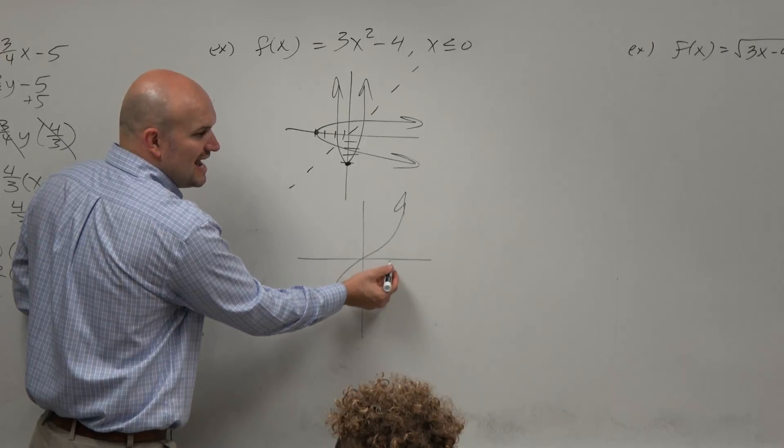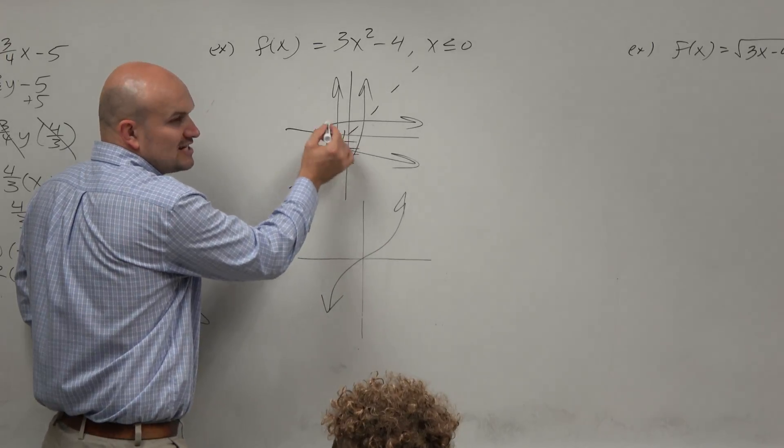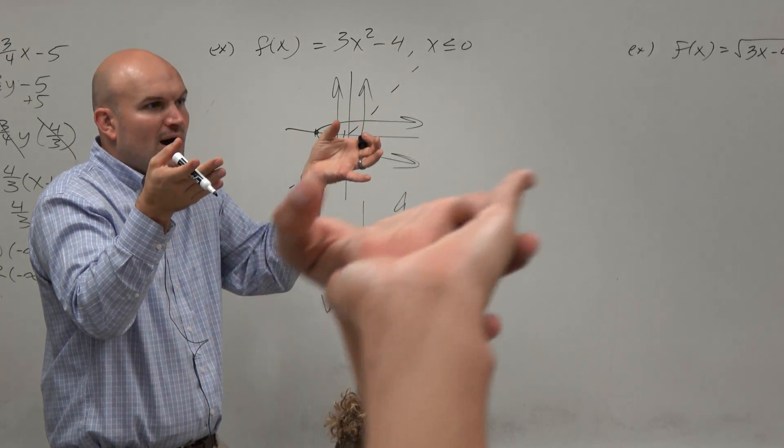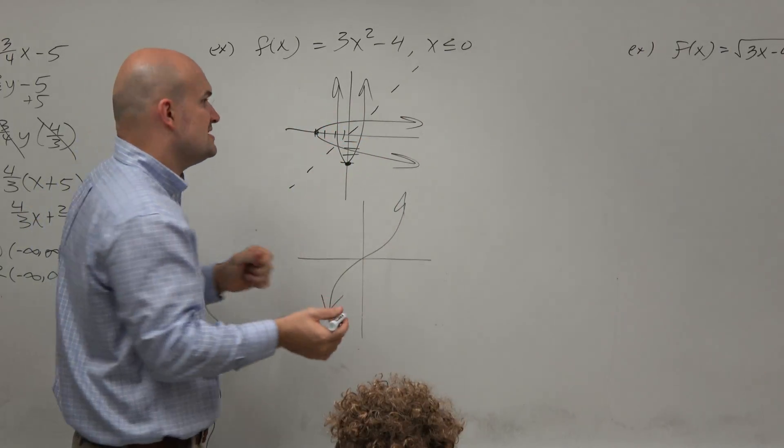Here's an example of a one-to-one function. Cube root. Every x has its own y. x squared doesn't have its own. Every x doesn't have its own y, right? 2 and negative 2 both share the y value 4, correct? So it's not one-to-one.